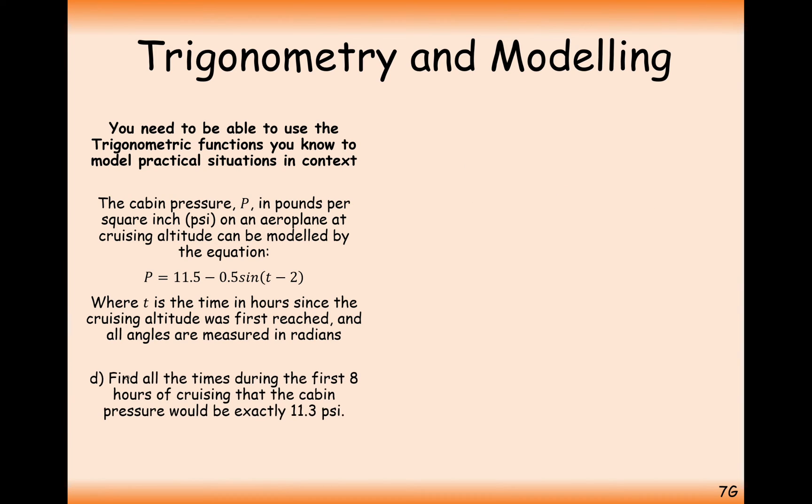For part D, we're going to find all the times in the first 8 hours of cruising that the cabin pressure would be exactly 11.3 psi. The first 8 hours means T is between 0 to 8. But remember, with any trig function, if you've got anything funny going on inside your sine, cos or tan brackets, you need to adjust the range of your answers. Subtract 2 from all three sides of your trig inequality, and you get minus 2 is less than T minus 2 is less than 6.